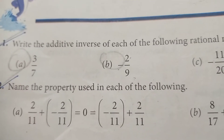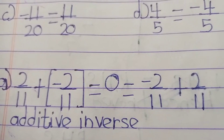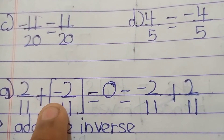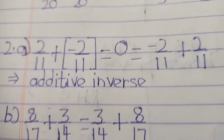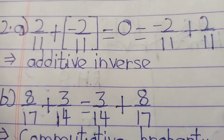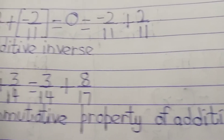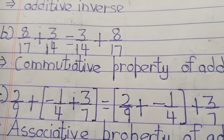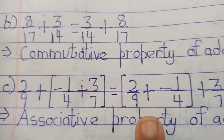The next question is to name the property used in each of the following. First part: 2/11 + (-2/11) = 0 = -2/11 + 2/11. Zero comes from here because when we add a number to its additive inverse we get zero — this is the additive inverse property. The next part involves 3/14 + 3/17, which uses the associative property of addition.